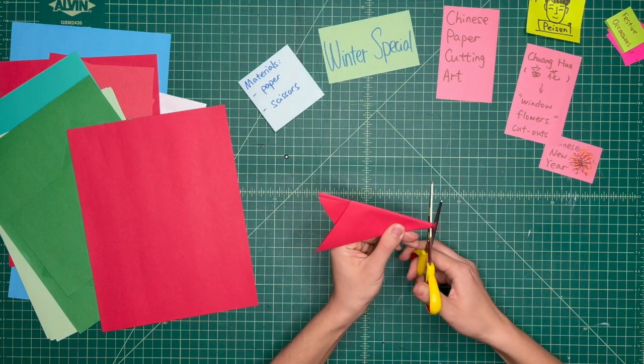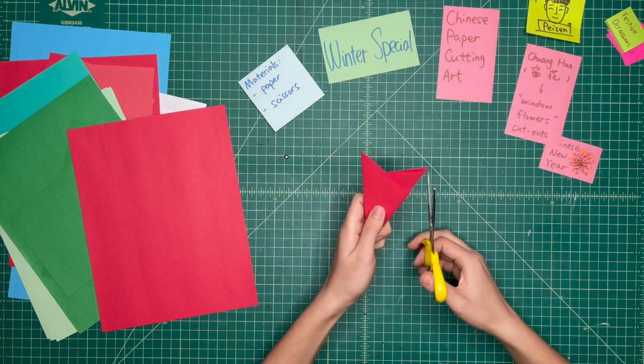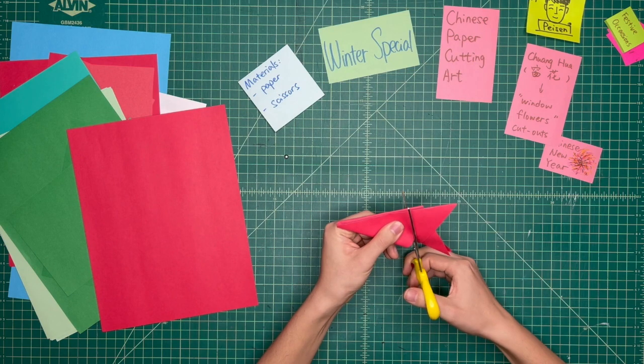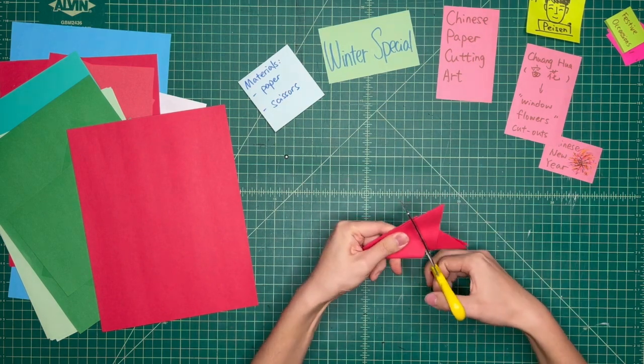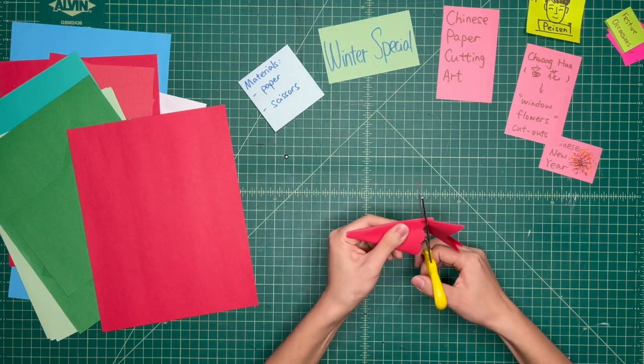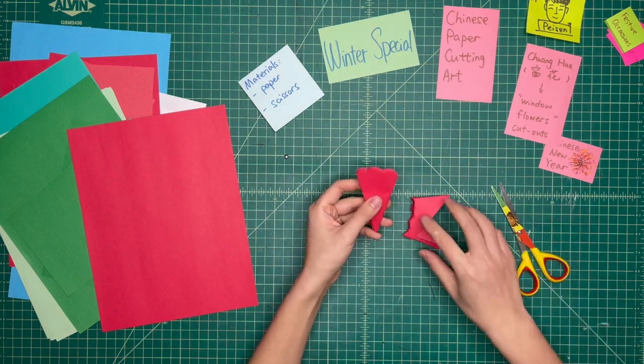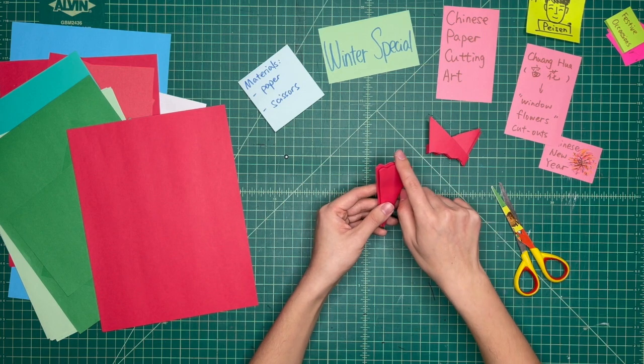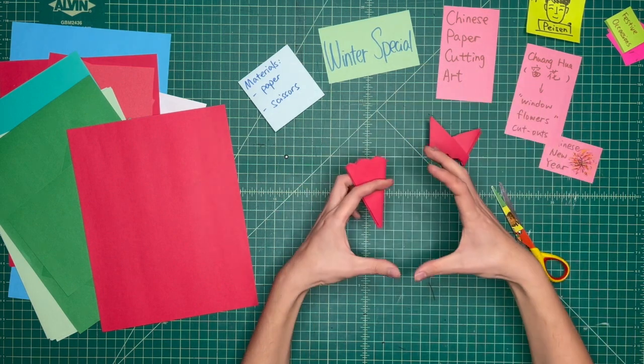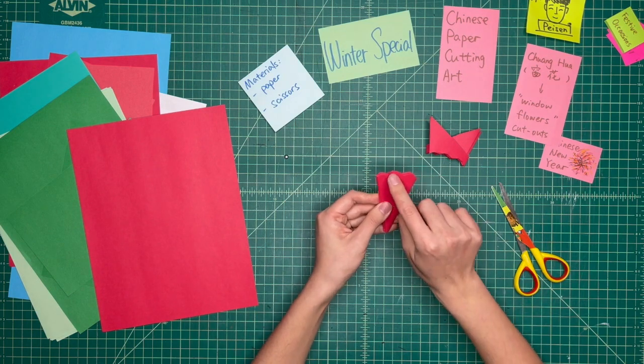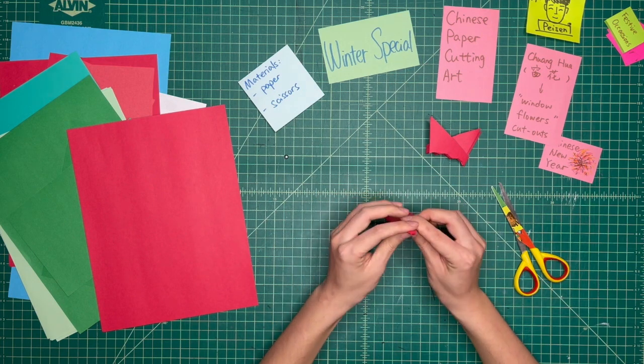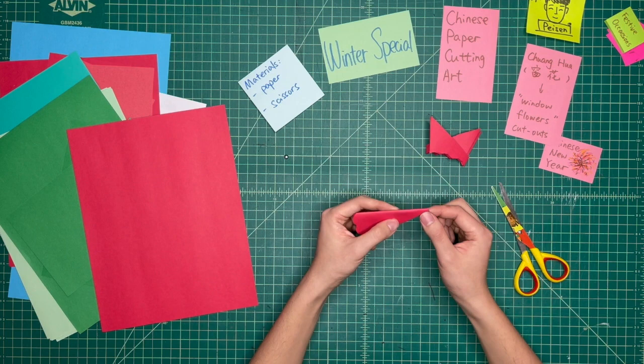Let's start. First, I want to cut this. And then, I want to make a wavy edge. Okay. So, this side will be the edge of our window flowers. When you open it, it will become a round shape. And then, this will be the edge. Now, I want a wavy edge. And then, this will be the center of the flower. I want the center to be empty. So, I cut here.